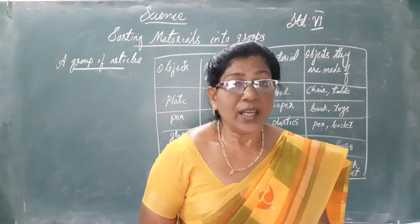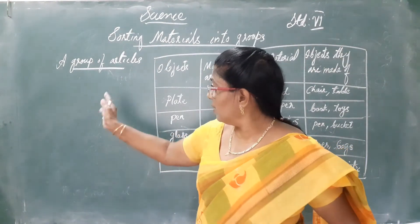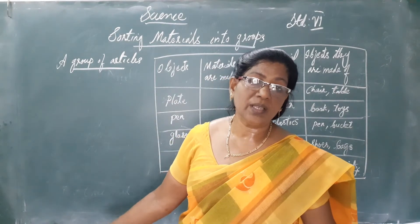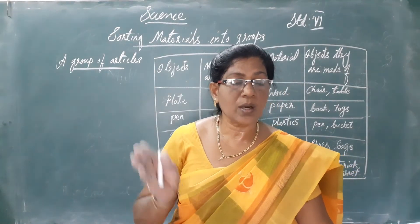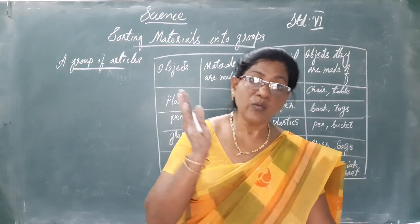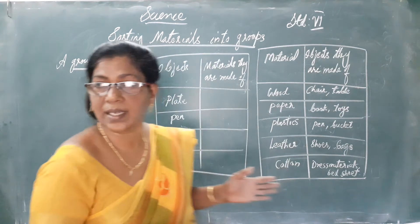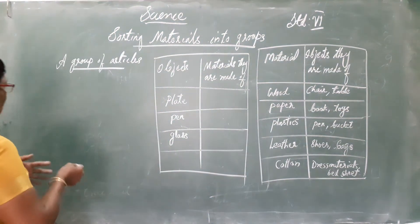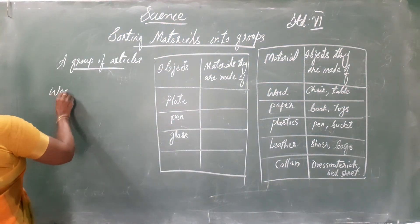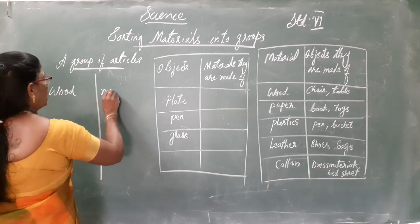We can divide the materials. I have given you a group of materials on the board. We can divide these materials on the basis of whether these items are made of wood or not. So we can group all the items under the category wood or not wood.